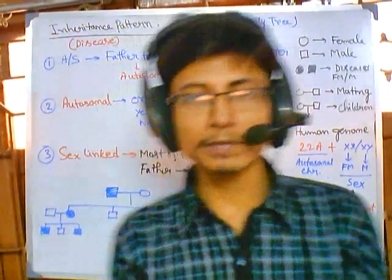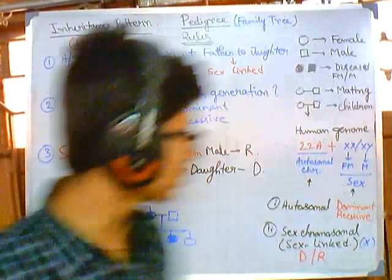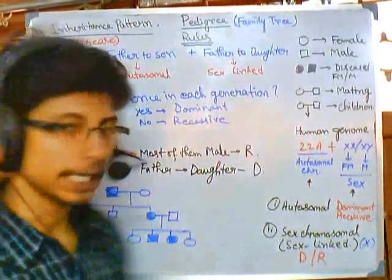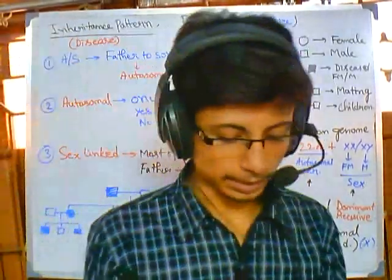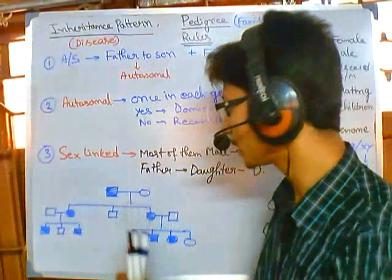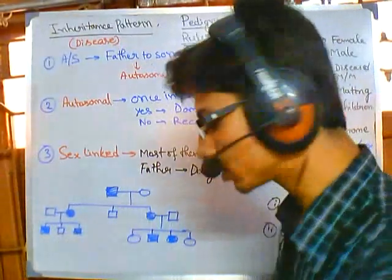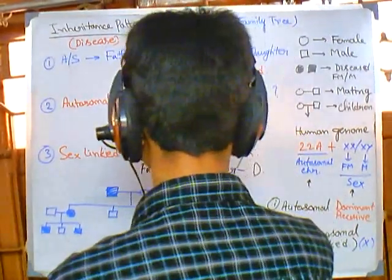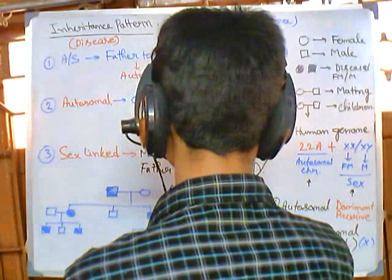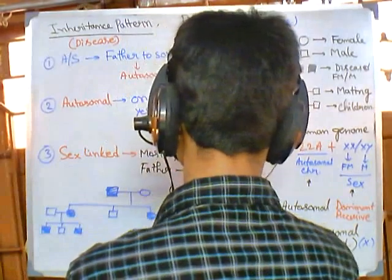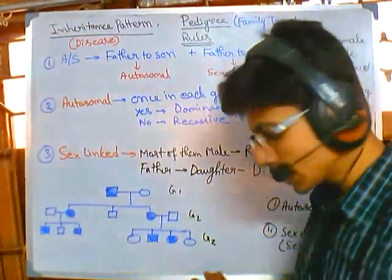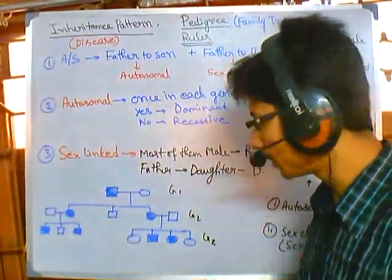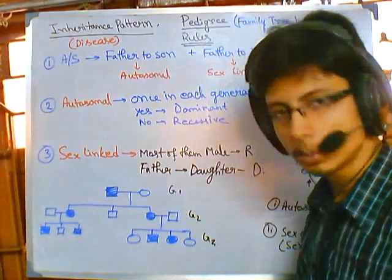We have discussed one type of pedigree analysis. Now let us look at another type. In this pedigree, this is a three-generation pedigree — generation one, generation two, and generation three. We need to determine the inheritance pattern of this particular disease.